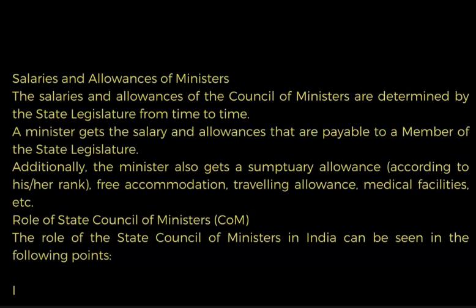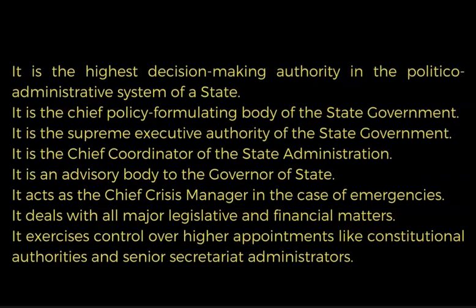The salaries of the Council of Ministers are determined by the state legislature from time to time. A minister gets the salary and allowances that are payable to a member of the state legislature; originally the minister also gets a sumptuary allowance according to his rank, along with free accommodation, traveling allowance, medical facilities, etc. The role of the State Council of Ministers includes: it is the highest decision-making authority in the political-administrative system of the state; it is the chief policy-formation body of the state government; it is the supreme executive authority of the state government; it is the chief coordinator of state administration; it is an advisory body to the Governor; it acts as the chief crisis manager in emergencies; and it deals with major legislative and financial matters and exercises control over higher appointments like constitutional authorities and senior secretarial administrators.